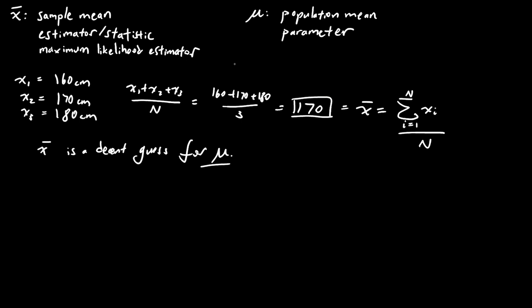So to make this a little more rigorous, what exactly is meant by parameter here? What is mu a parameter for? And when we say that x bar is a maximum likelihood estimator, maximum likelihood of what exactly?